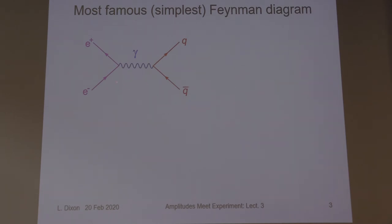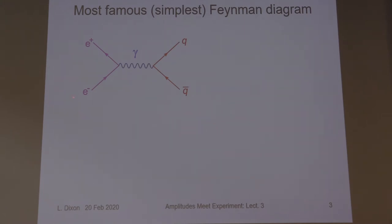Let's do the famous Feynman diagram that appears on the postage stamp with Feynman — although in that case it was pure QED, tree-level exchange. Here we want to change one of them from being another electron into a quark. This process occurs all over the place in collider physics depending on which way you read it. It can correspond to deep inelastic scattering if you read it vertically: the electron comes in, scatters off a quark or antiquark in the proton, and the electron goes out.